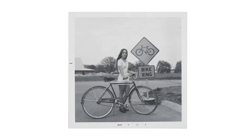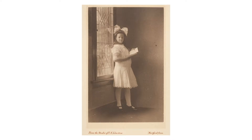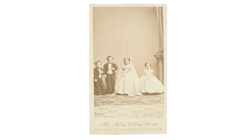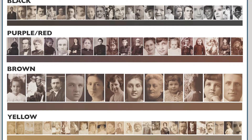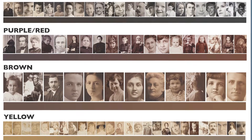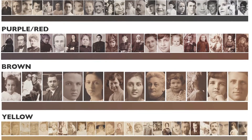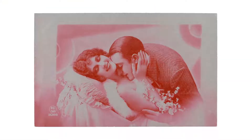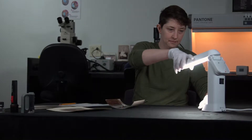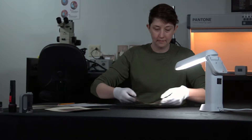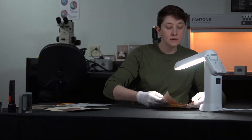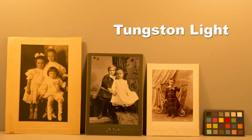Monochromatic images may be black, purple-red, brown, or yellow, and there is a range within each image color. There are also images that are other colors, like blue and even red or green. When determining image color, use a daylight balance light source, as other lights skew your perception of image color.